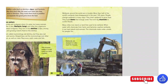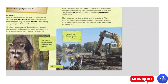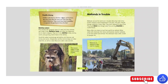Wetlands in trouble. Wetlands around the world are in trouble. More than half of the world's wetlands have disappeared in the past 100 years. People change wetlands in many ways: they drain wetlands to grow food, build dams to change water flow, and dig channels to control floods. Many cities now stand on land that used to be wetland. When water with chemicals from farms and factories reaches wetlands, it can harm plants and animals. The chemicals make water unsafe for people too. Wetlands are also drained to make room for houses.